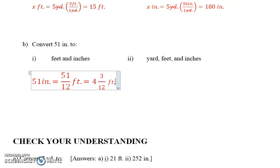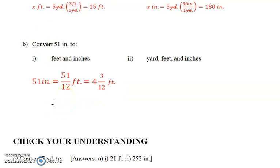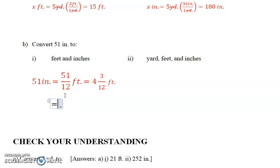So now we have it as 4 and 3 twelfths of a foot. Normally we would take that fraction, and what we would do is we would take it and we would reduce it or put it in lowest terms. We're not going to do that now because the numerator is the inches.